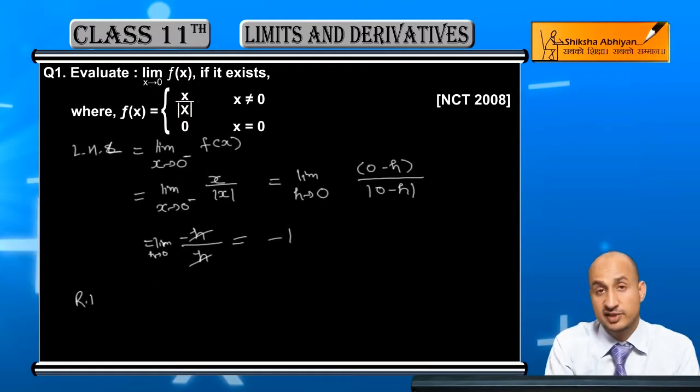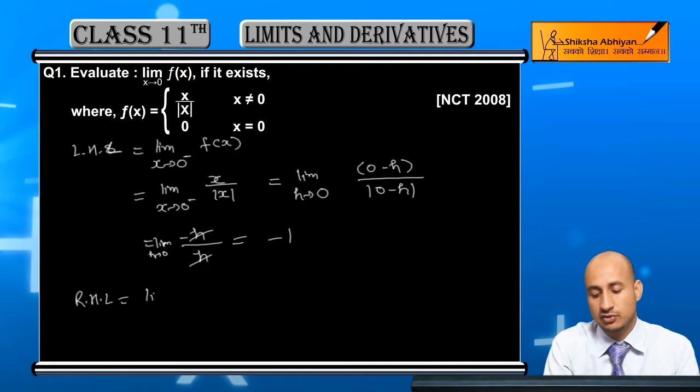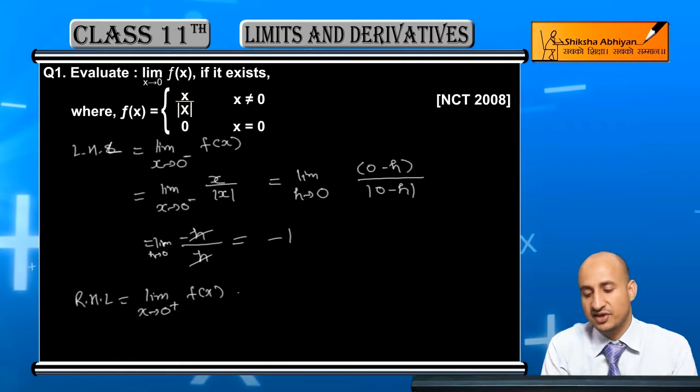Now, what about the right hand limit? Right hand limit will equal limit x→0⁺, which means 0 slightly greater. In this case, what will f(x) be?